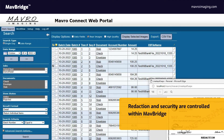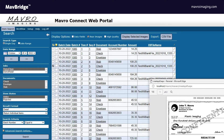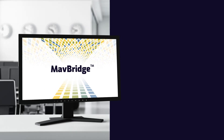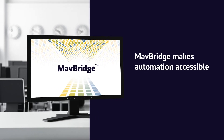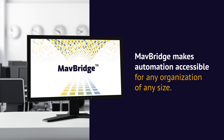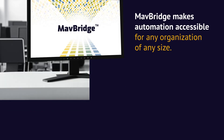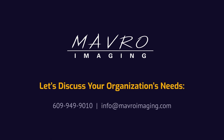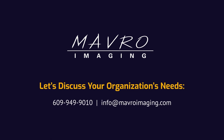Redaction and security are controlled within MavBridge using groups that are configured by the customer. Users within the organization can be assigned to one or more groups. MavBridge makes automation accessible for any organization of any size. Please reach out to us if you'd like to learn more or discuss your organization's needs.